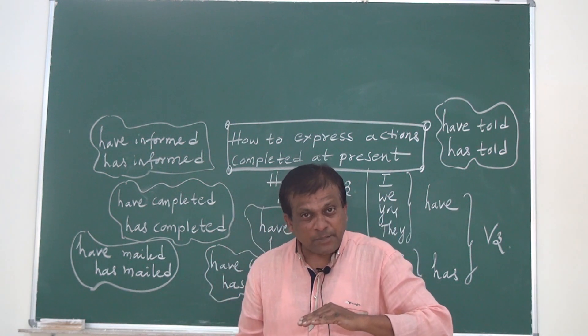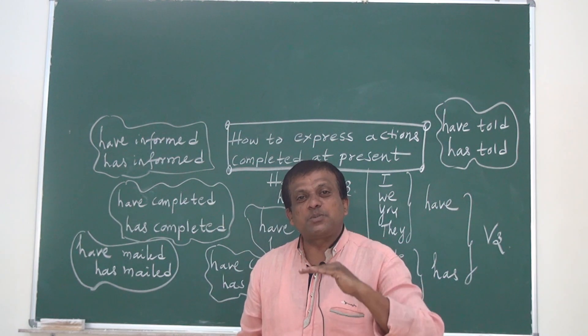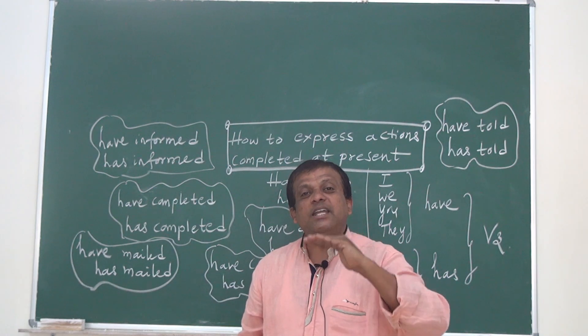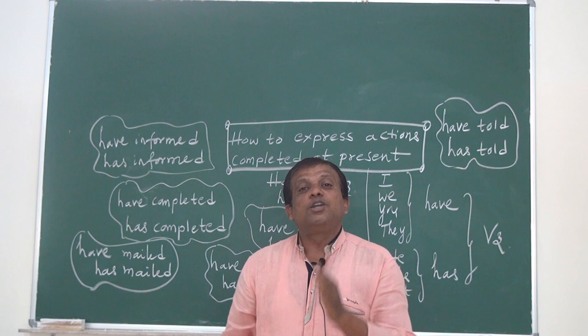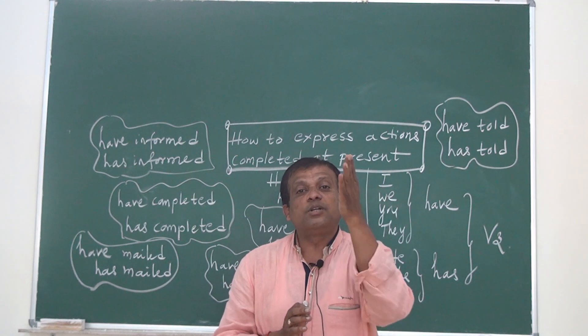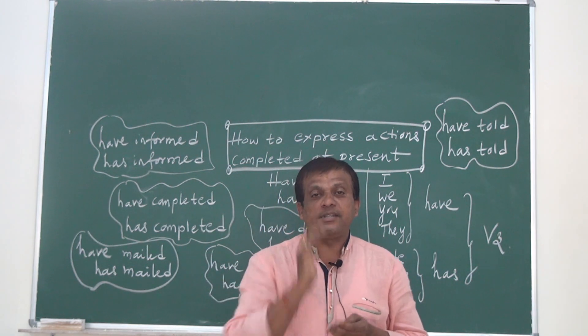So action started at present and completed at present can be expressed with the help of has and have by taking verb number 3, V3. For this, you should definitely practice column number 3 of the verb chart. Go, went, gone. Gone is V3.